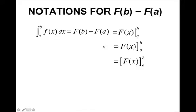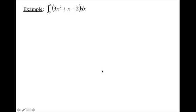So here's notations for F of b minus F of a. We typically will write it as such, but you'll also see it as the antiderivative evaluated from a to b. That's what all of these mean. I typically go with the first one. Once you find the antiderivative, you still have to evaluate it from a to b.